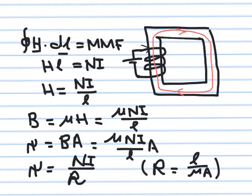We're going to make a number of assumptions to reach the circuit equivalence. The first assumption is that H is the same throughout the steel core. If H is the same, the line integral becomes simply H multiplied by l, where l is the length of the contour. So H·l = NI, and I can solve for H. NI has a name — magnetomotive force — it is the source of excitation, and we treat it similarly to a voltage source.